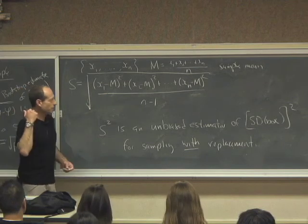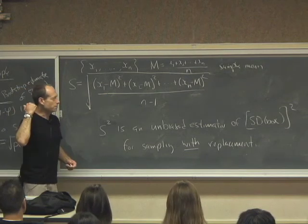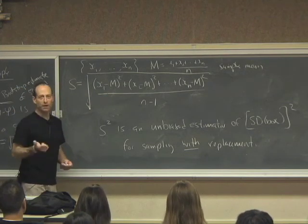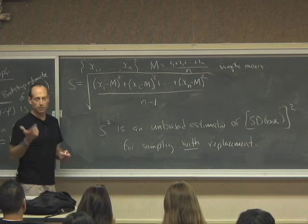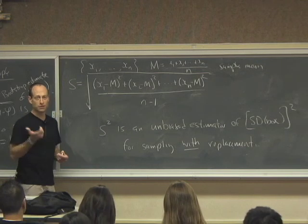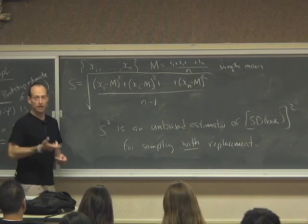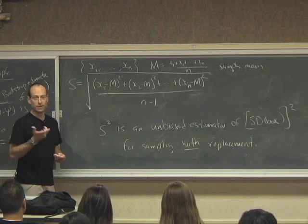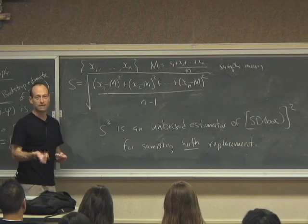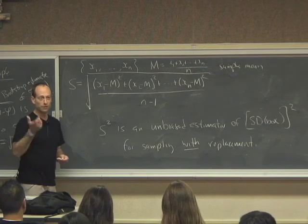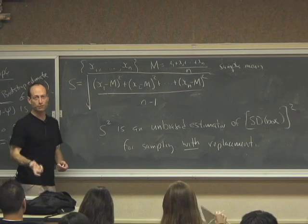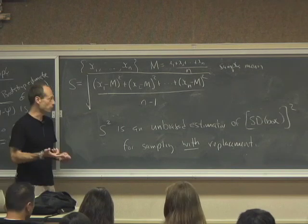So we've got the conservative bound on the SD of the box for a 0, 1 box. That is, the SD of a 0, 1 box can't be bigger than a half. We have the bootstrap estimate of the SD of the 0, 1 box S, which is based on substituting the sample percentage for the actual percentage, pretending that the sample percentage is exactly right.